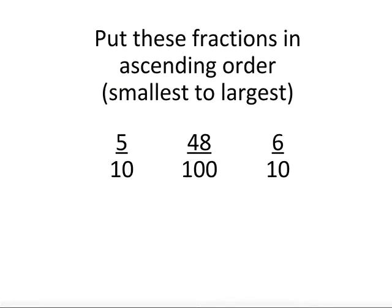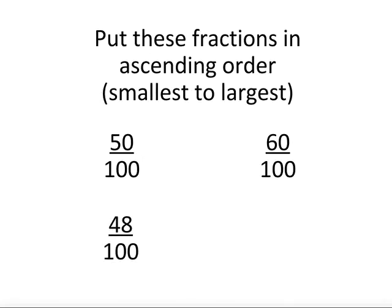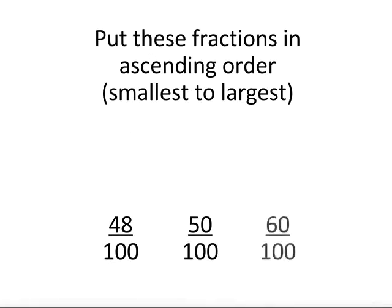What about putting these fractions into order from smallest to largest? When they are different denominators it is a bit harder. So we can change 5 tenths into 50 hundredths and 6 tenths into 60 hundredths. Now 48 hundredths is the smallest, then 50 hundredths, followed by 60 hundredths.